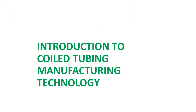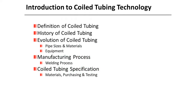Welcome back. In this training, let's learn about coiled tubing manufacturing technology. In this training session, let's review the definition of coiled tubing, history of coiled tubing, evolution of coiled tubing including pipe size, materials and equipment, manufacturing process for coiled tubing including welding process, and coiled tubing specifications such as materials, purchasing and testing.